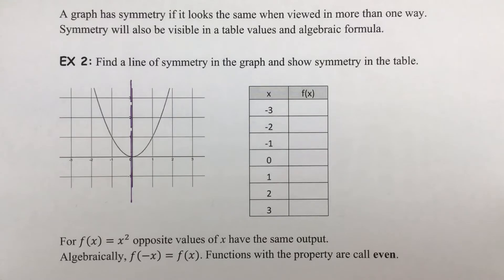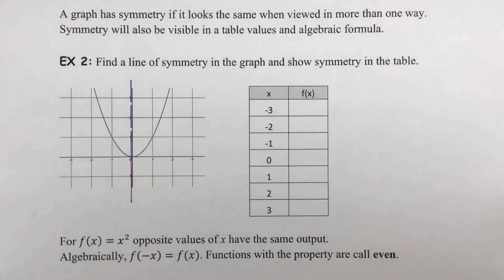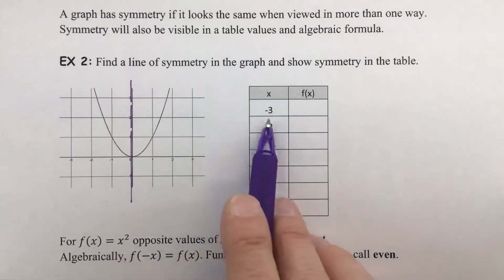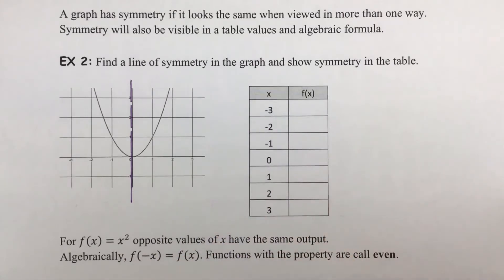The graph that we're looking at here is f(x) = x squared — it is the basic quadratic parent function. In the graph, you can see the symmetry around the y-axis. In the table of values, if I start to evaluate this function for different x's, you're going to see symmetry in the table as well. I've got values all the way from negative 3 to 3.